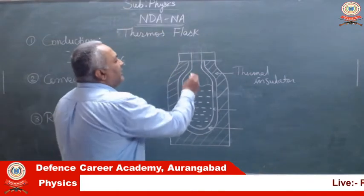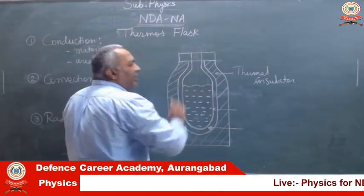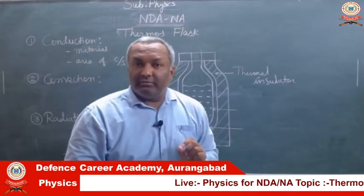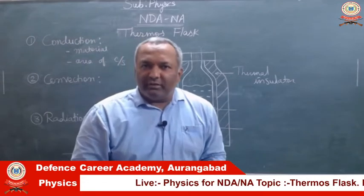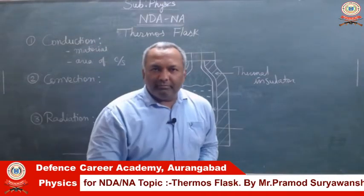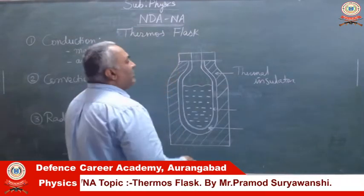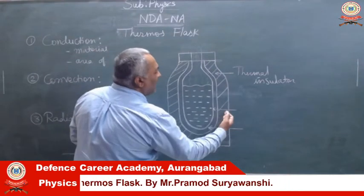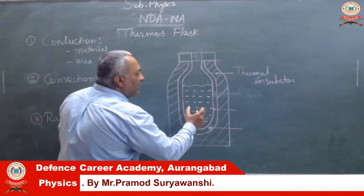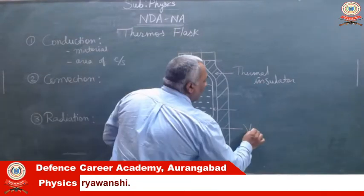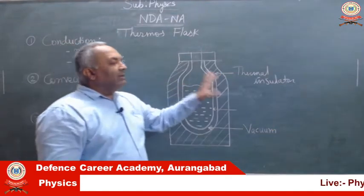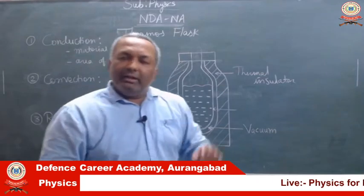Next, the inner vessel that contains the food article is typically made of metal, just to add strength and to have the ability to withstand the higher temperature of the object stored inside. Now, in between these two vessels — the thermal insulator on the outside and the inner vessel carrying the heated object — there is a vacuum maintained between the inner vessel and the thermal insulation.